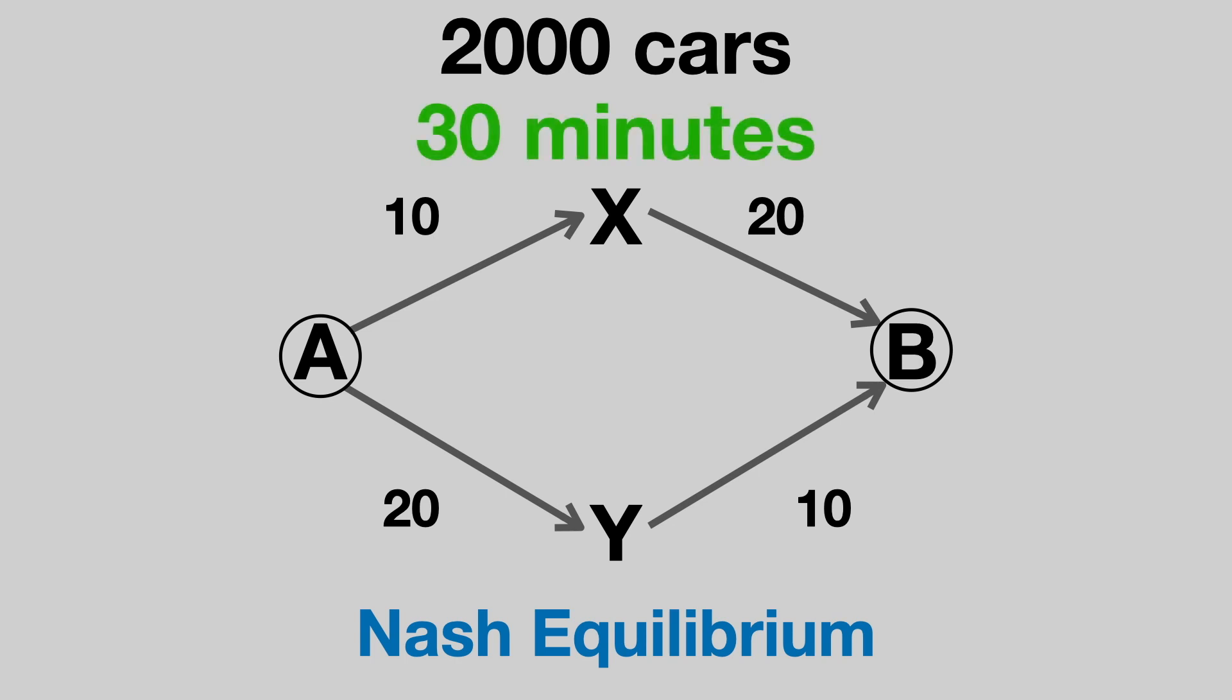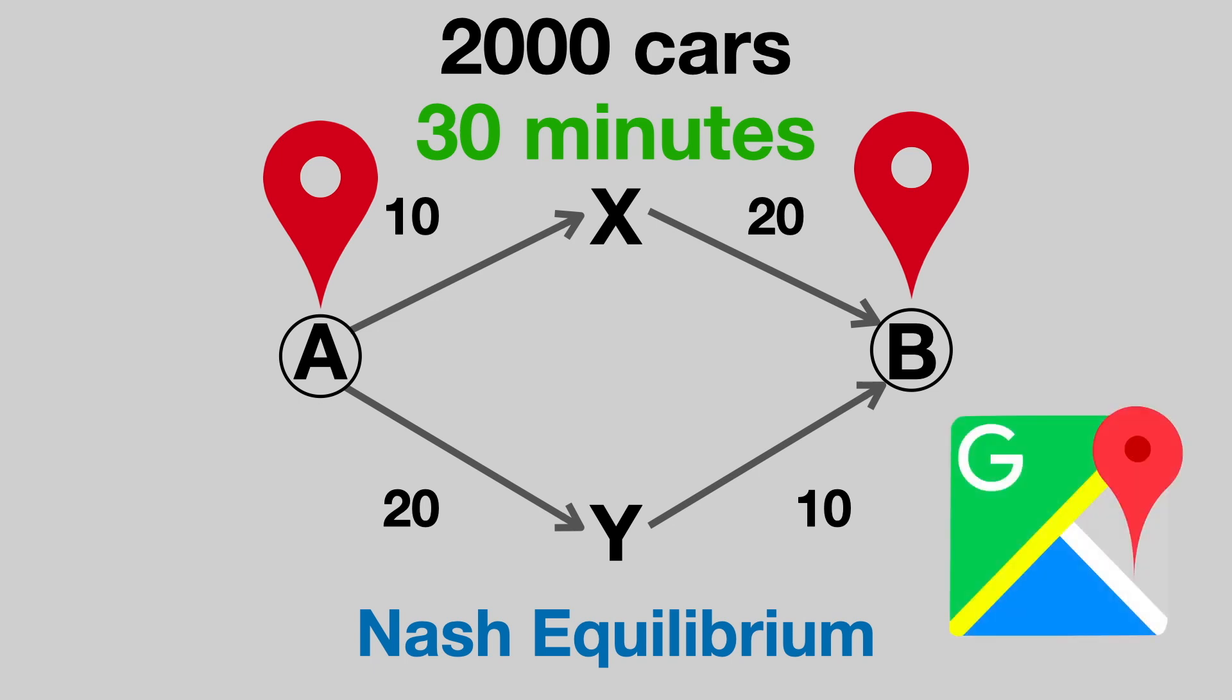Here, we've made an assumption that every driver knows what every other driver is doing before setting off. They will thus always act optimally and use the quickest route. This isn't actually too far from reality, as people will often check their phone or sat-nav to see which route is quickest.